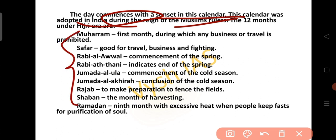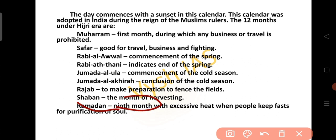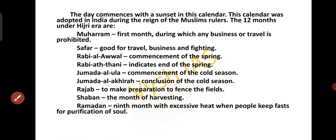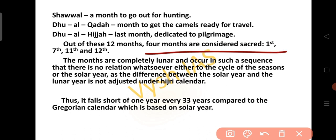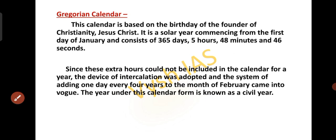The 12 months of the Hijri calendar include Ramadan, the 9th month, during which people keep fast for purification of the soul. Shawal is the month to go out for hunting, Dhul Al-Qa'da is the month to get the camels ready for travel, and Dhul Al-Hijjah is the last month dedicated to pilgrimage. Out of the 12 months, 4 months are considered sacred: the 1st, 7th, 11th and 12th. The month is completely lunar and has no relation to the cycle of seasons or the solar year. The difference between the solar year and the lunar year is not adjusted in the Hijri calendar, and it falls short by 1 year every 33 years compared to the Gregorian calendar.